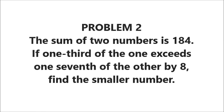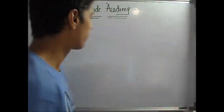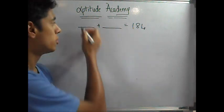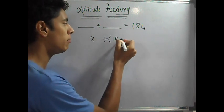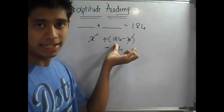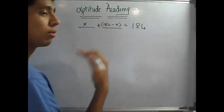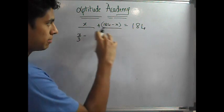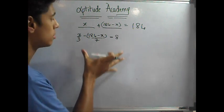Problem 2: The sum of two numbers is 184. If one third of the one exceeds one seventh of the other by 8, find the smaller number. You've got two numbers that when added give you 184. You would usually use X plus Y, but let's eliminate Y. Consider the two numbers as X and 184 minus X. If you simplify this, X and X cancel, so you reach 184. So why do you need Y when you can use X and 184 minus X? Now the next statement is one third of one exceeds one seventh of the other by 8, so one third of one minus one seventh of the other gives you 8.